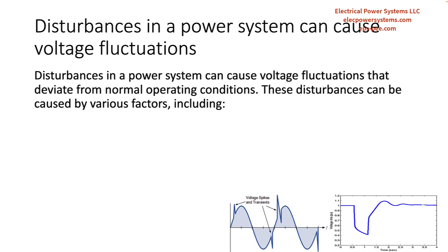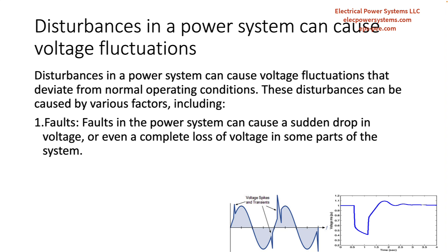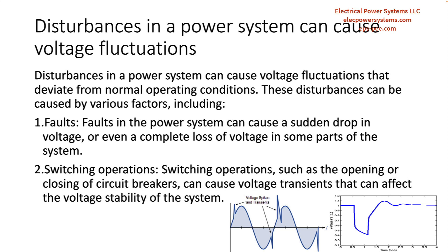Disturbances in a power system can cause voltage fluctuations that deviate from the normal operating conditions. These disturbances can be caused by various factors, including faults. Faults in the power system can cause a sudden drop in voltage, or even a complete loss of voltage in some parts of the system.